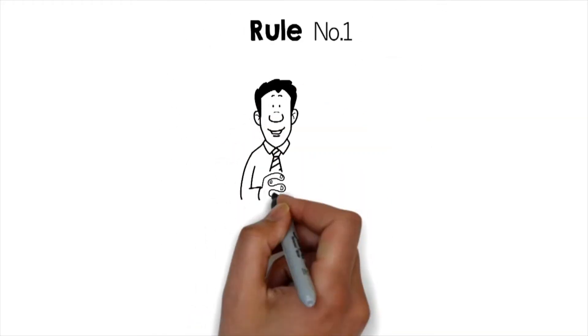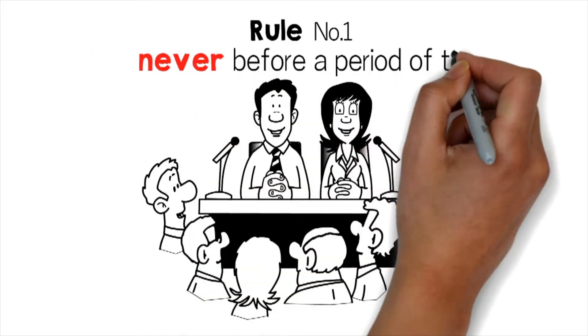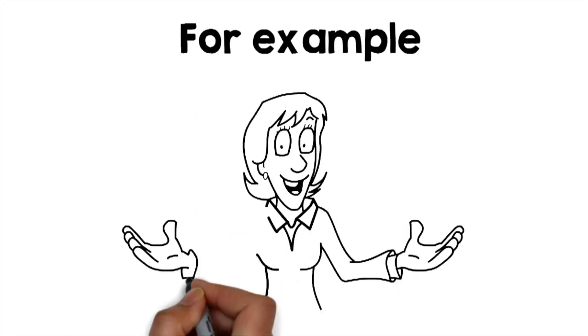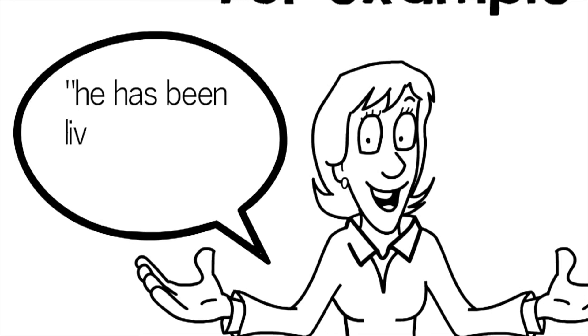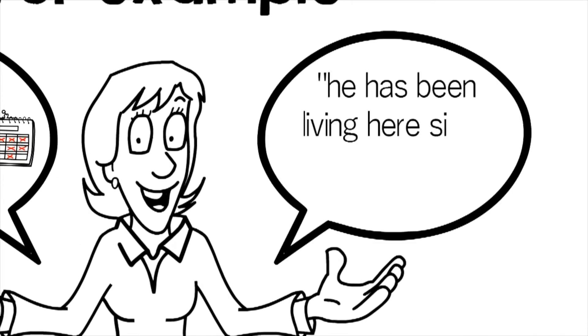Rule number one, they're both used only before a point of time, never before a period of time. For example, you can say he's been living here since 2007, but not he's been living here since 10 years.